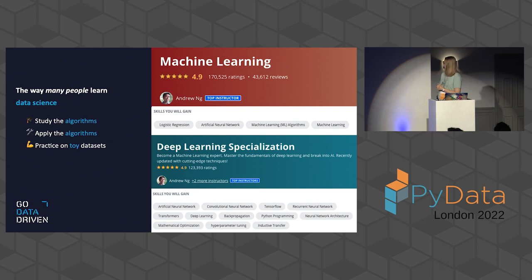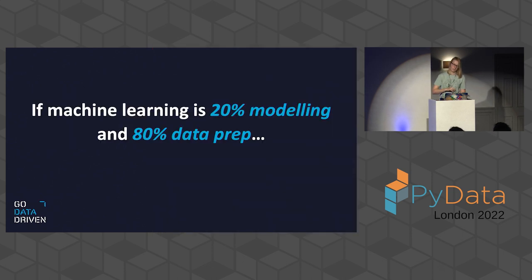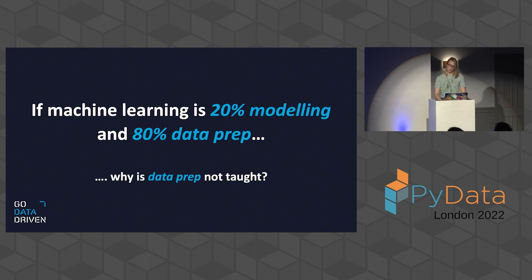Now I work as a data scientist, and a common thing to say is that 80% of the effort we put into projects is about data cleaning or data preparation, and only 20% is about the models. So if machine learning is 20% modeling and the majority of our time is spent on data preparation, why is data preparation not taught?